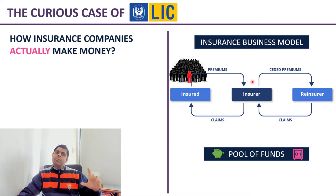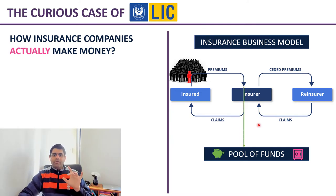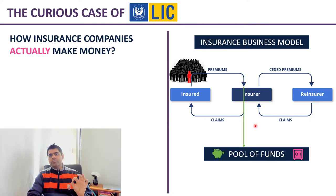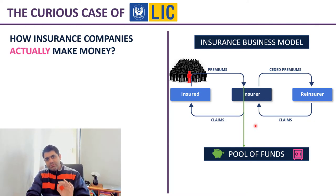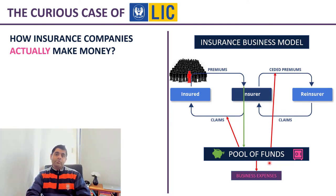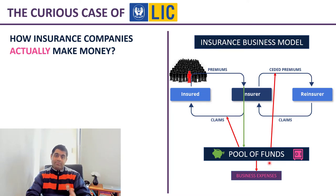Moving on from how an insurance business works, let's understand how insurance companies actually make money. All the premiums paid go into a pool of funds. All claims paid out come from this pool, as do premiums paid to reinsurance companies. Because it's a business, they also pay for expenses related to running the business on a day-to-day basis — marketing, sales, operations, growing the business, and paying salaries.